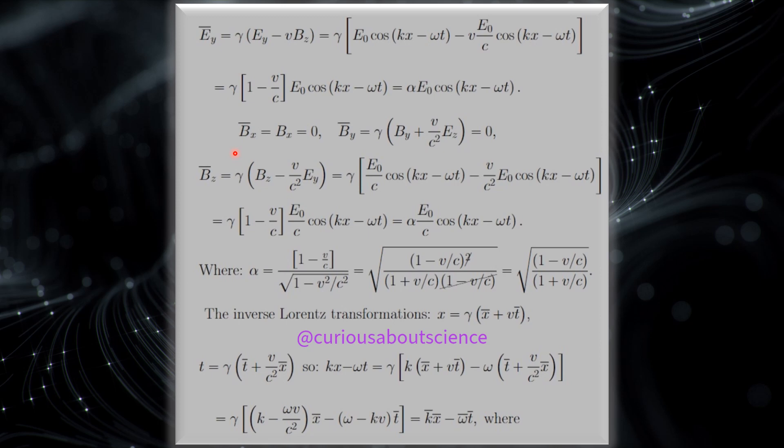Again, there is no z component in this field, so that's 0, and we see that by goes to 0, since there is no by component, and there is no e z component. So, the only component that can transform is the b z component, and we see how it transforms. Plug it all in, and we get a similar situation here. Alpha, and then we have e naught over c, cosine again. So, you see our forms are very similar, as they probably should be.